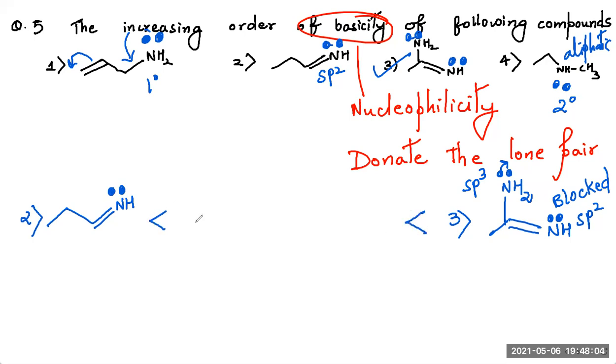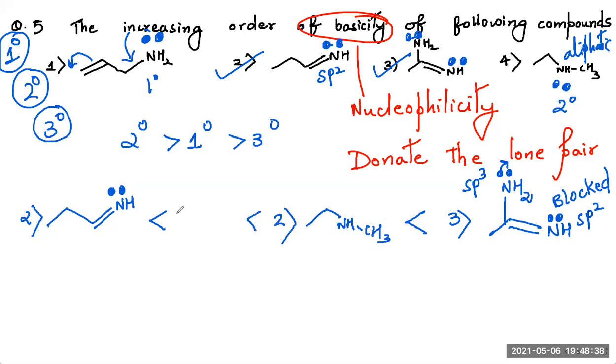Increasing order, so I give this sign. Now we have to solve, these two are out. Now we have to find 1 and 4. Now 1 is 1 degree and 4 is 2 degree. Very simple we know, out of 3 degree, 2 degree and 1 degree amine, the order is 2, 1, 3. Everybody remembers that, so this can be directly solved. Here, 2 will come first, and then 1 here.